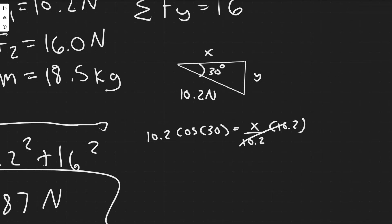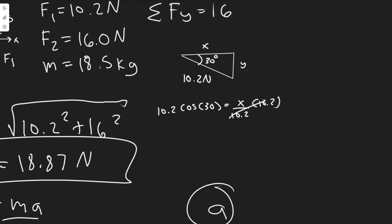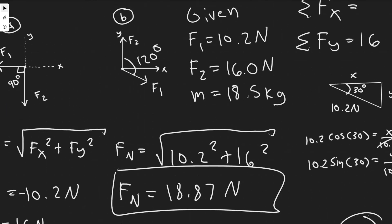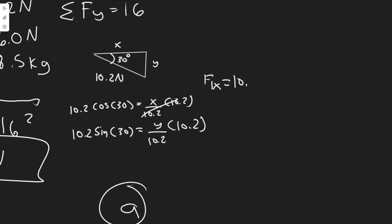For the y component, we use sine: sine of 30 equals opposite over hypotenuse, so y equals 10.2 sine of 30. In general, F1x equals 10.2 cosine of 30 and F1y equals 10.2 sine of 30.